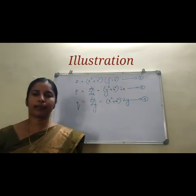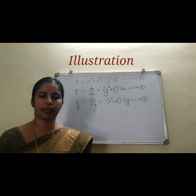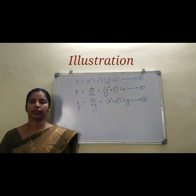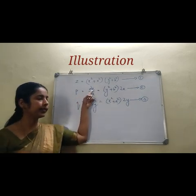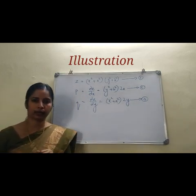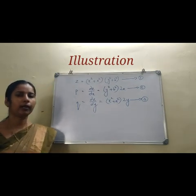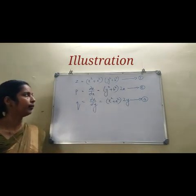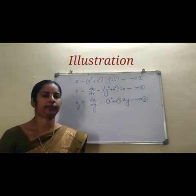One more illustration. Consider z = (x² + a²)(y² + b²), where z is a function of x and y and a and b are arbitrary constants. We have to make a PDE by eliminating the arbitrary constants. You differentiate z partially with respect to x and y. For p: while differentiating z partially with respect to x, keep y as a constant, so y² + b² is a constant. The derivative of x² + a² is 2x, so p = 2x(y² + b²).